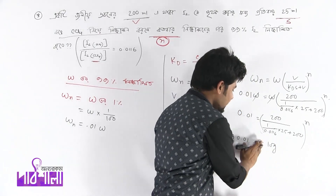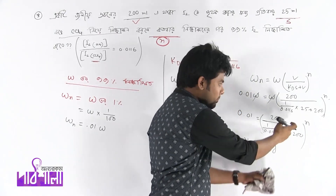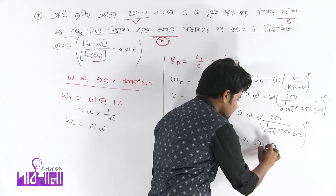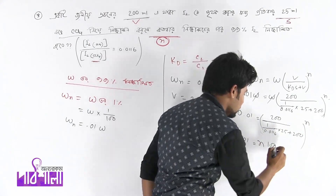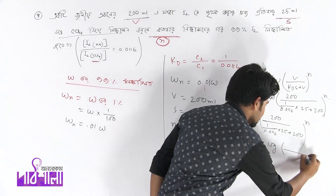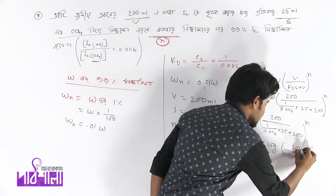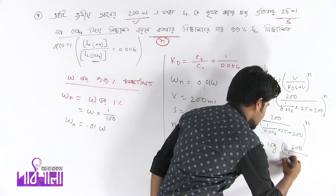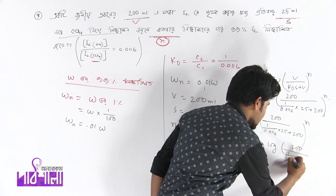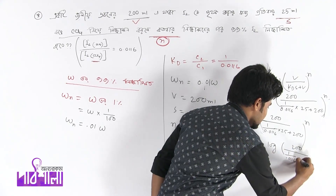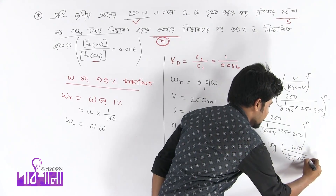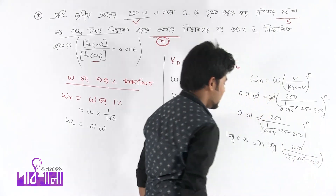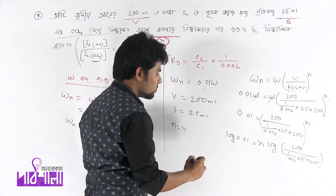So we'll have log in the log. So n into log 200 divided by — 1 by point 0116 into 25 plus 200. This is the calculation. These are 1.86.